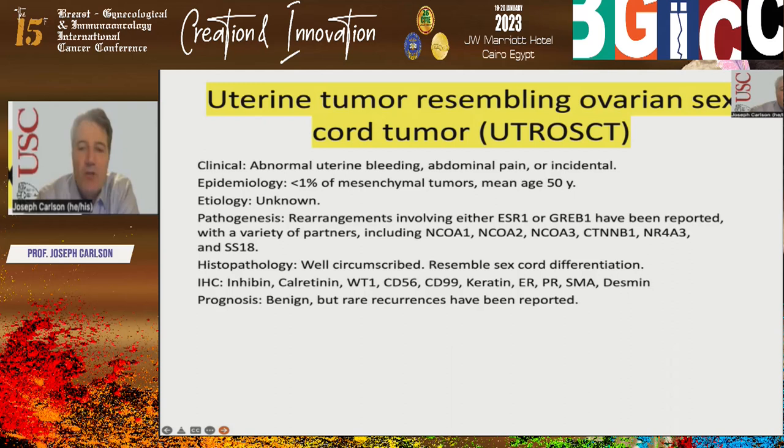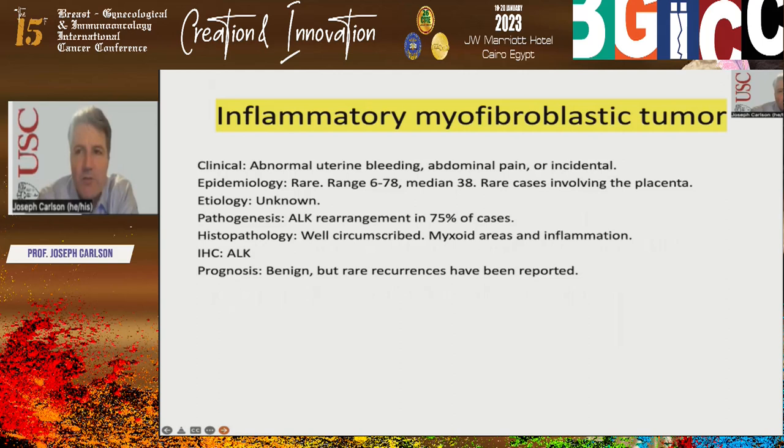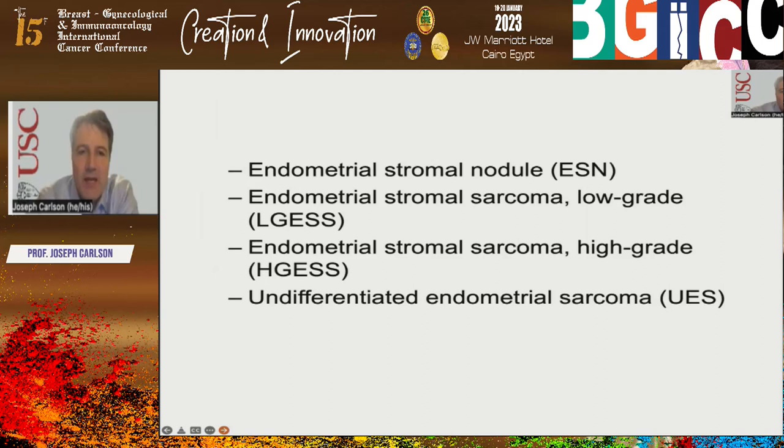UTROSCT — uterine tumor resembling ovarian sex cord tumor — presents with abnormal uterine bleeding. These tumors are well-circumscribed and have sex cord differentiation. They do have some characteristic fusions. They are benign, but rare recurrences have been reported. Inflammatory myofibroblastic tumor also shows abnormal uterine bleeding and has ALK rearrangements.